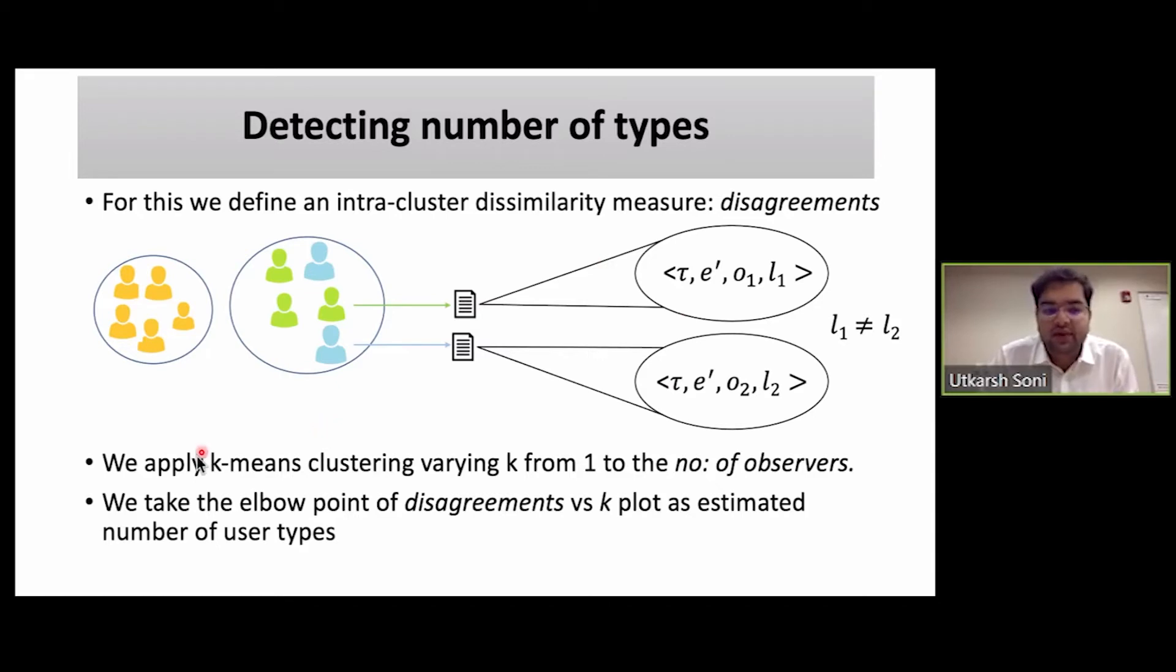What we do is, after this, we apply k-means clustering varying k from 1 to the number of observers, and we compute the disagreement value for each clustering instance. Then we take the elbow point of the disagreement versus k plot as the estimated number of user types, because what will happen is that once you reach that point, observers from the same type would start getting separated, and that wouldn't decrease the disagreement value a lot. So the elbow point indicates the actual number of user types.